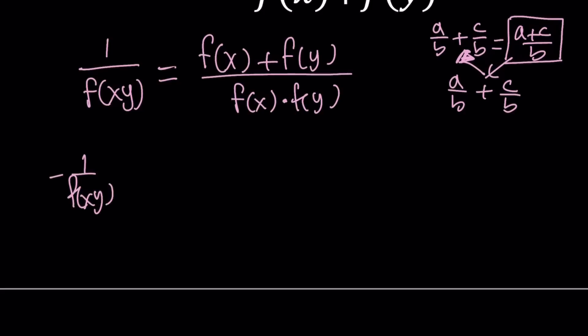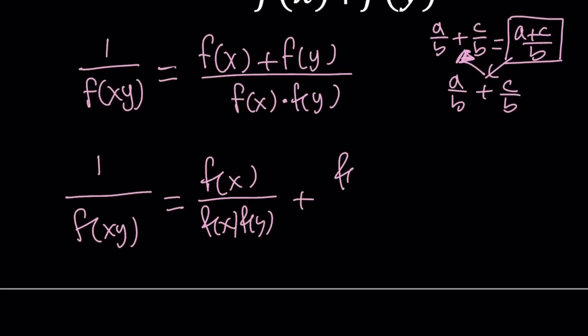So 1 over f of xy equals f of x over f of x f of y plus f of y over f of x times f of y. Now if you added these two fractions, because they have the same denominator, you would get this expression right here. So what we did is correct.